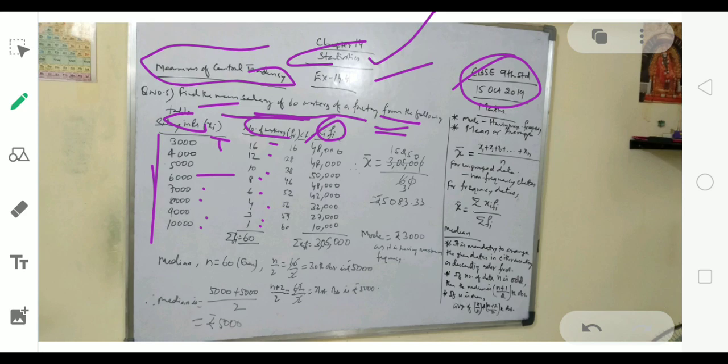To find XI FI, we multiply: 16 into 3 is 48,000, then 4 into 12 is 48,000, 10 into 5 is 50,000, 6 into 8 is 48,000, 7 into 6 is 42,000, 8 into 4 is 32,000.